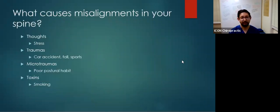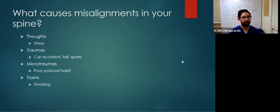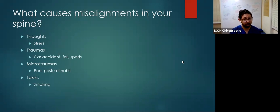What causes misalignments in your spine? In chiropractic we say three things: thoughts, traumas, and toxins. Thoughts means stress — if you are stressed out, stress can cause your bones to become misaligned. On a basic level, when your body is in a stress state, it can be in a sympathetic — fight or flight — state, driven by anger or emotions. Your body becomes very tense, muscles tighten up to protect you, and since muscles attach to bones, they can actually cause your spine to become misaligned if your body is in a stressful state for too long.